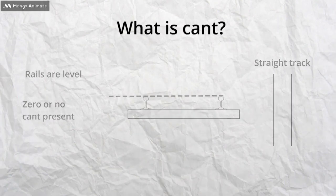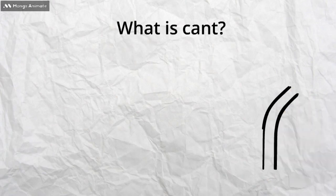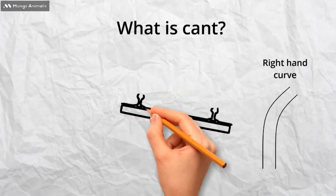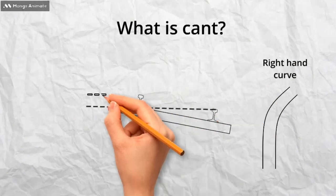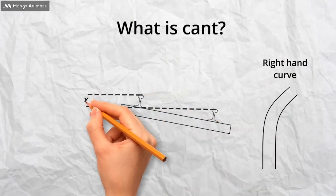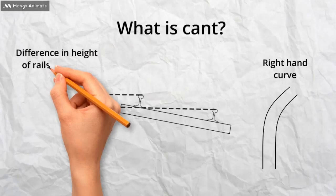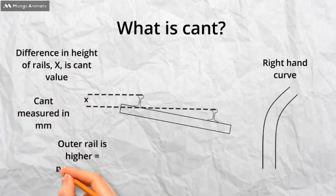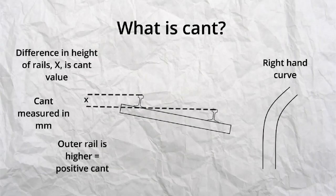Curves are where we are likely to find cant. Here we have a right-hand curve. You can see the left-hand rail is lifted above the right-hand rail. The difference in height between the rail is the cant, shown here as X. It is measured in millimeters.